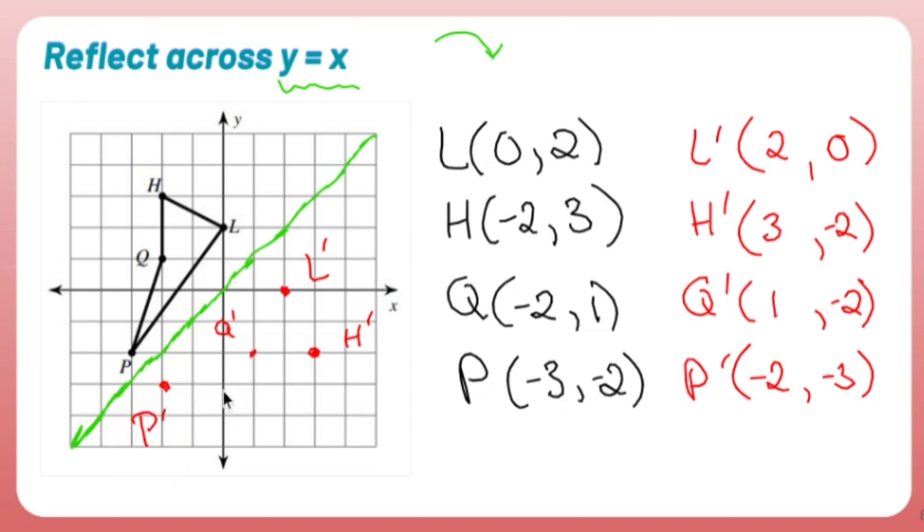Now for me, I struggle mightily with graphing these. So I'm going to notice that H connects to Q. So H prime is going to connect to Q prime. Q connects to P. So Q prime connects to P prime. P connects to L. So P prime connects to L prime. And then last but not least, L connects to H. So L prime to H prime.